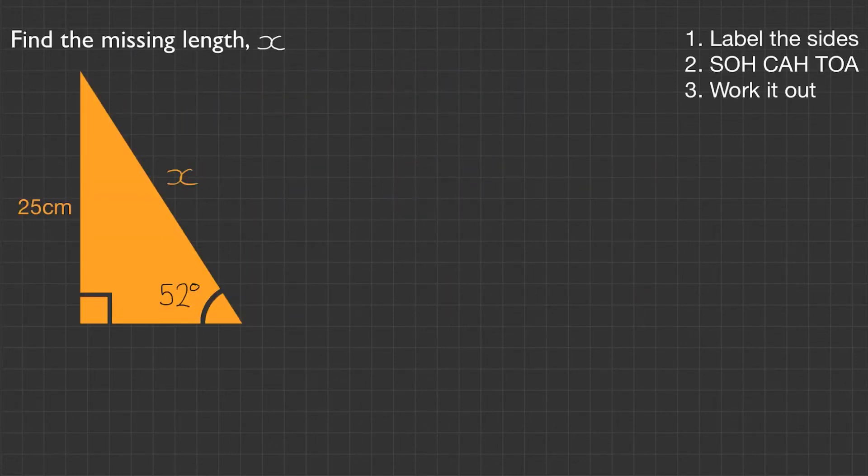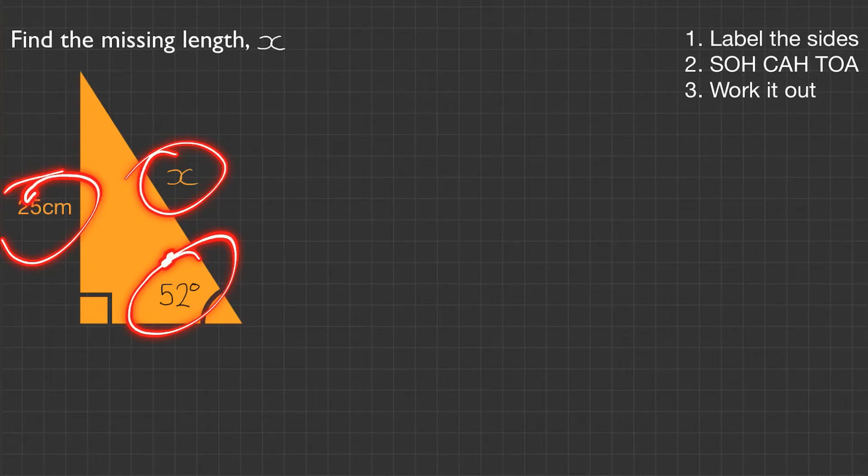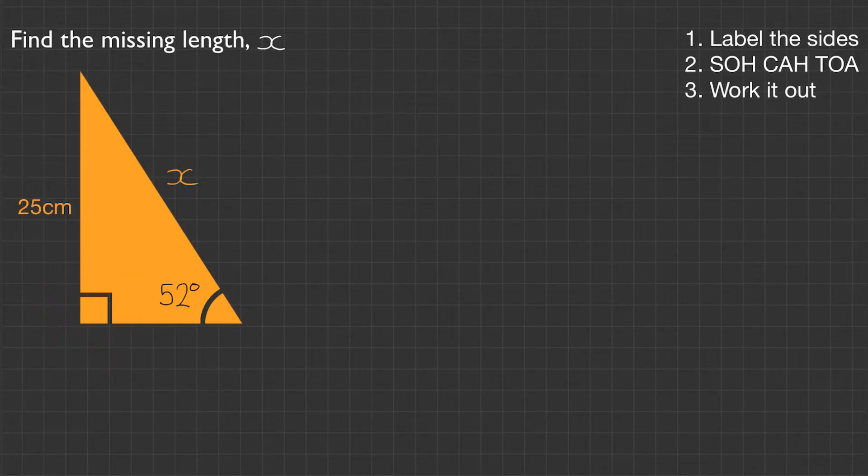The first question says find the missing length x. We have three bits of information: 25 centimeters, x, and 52 degrees. There are three pieces we need to answer the question. We also know it's a right angle triangle as it's got the right angle here in the top right corner. So the first step is to label the sides. I always like to start by labeling the hypotenuse.